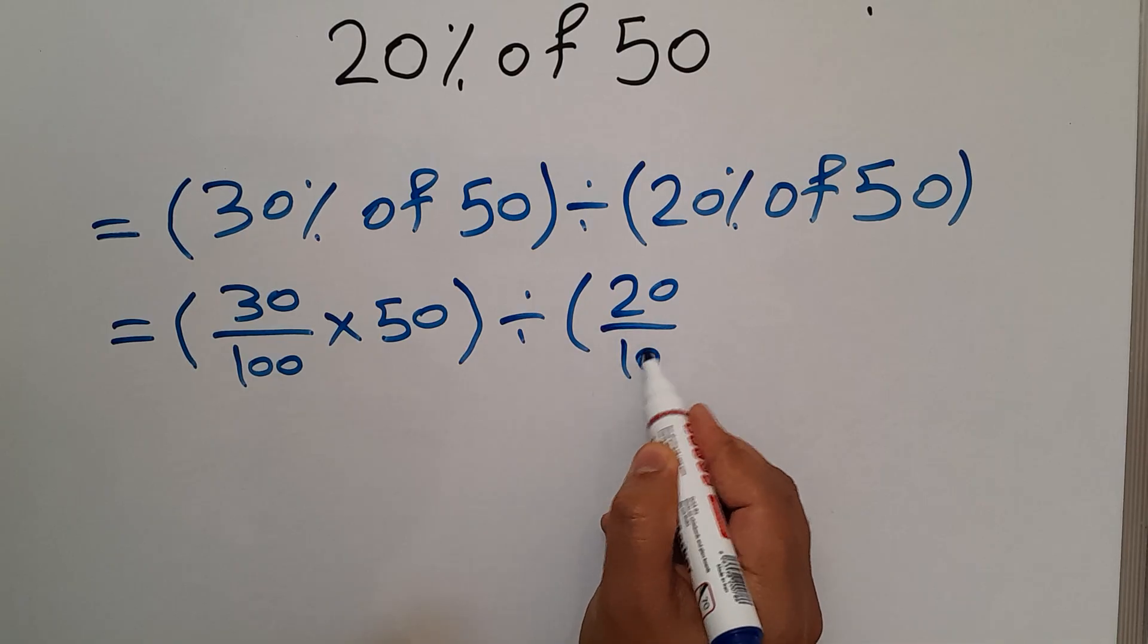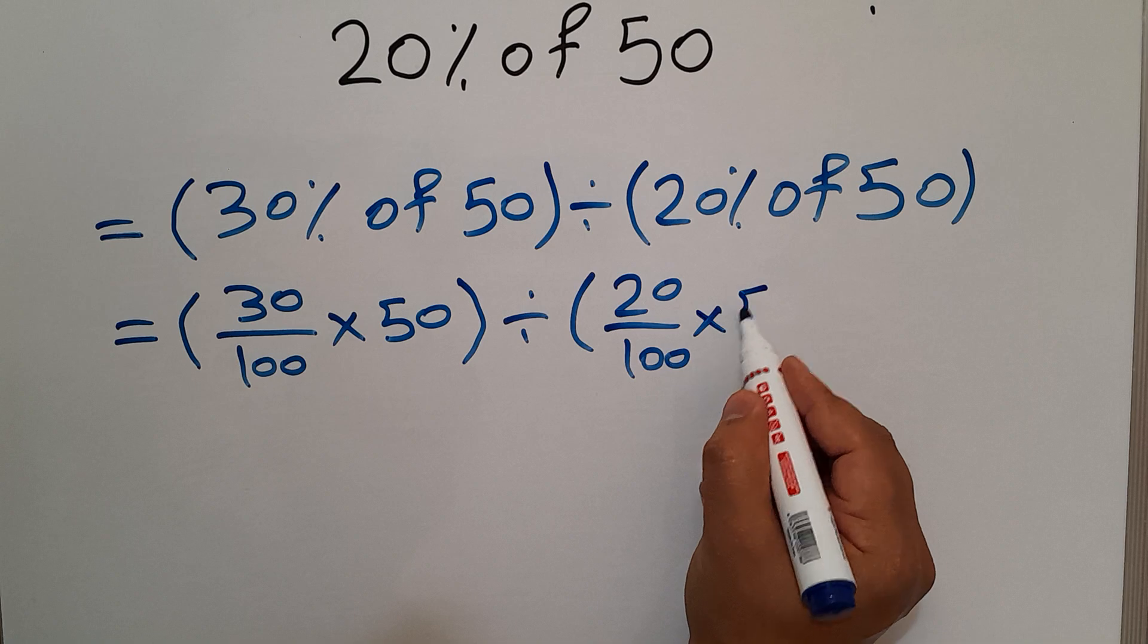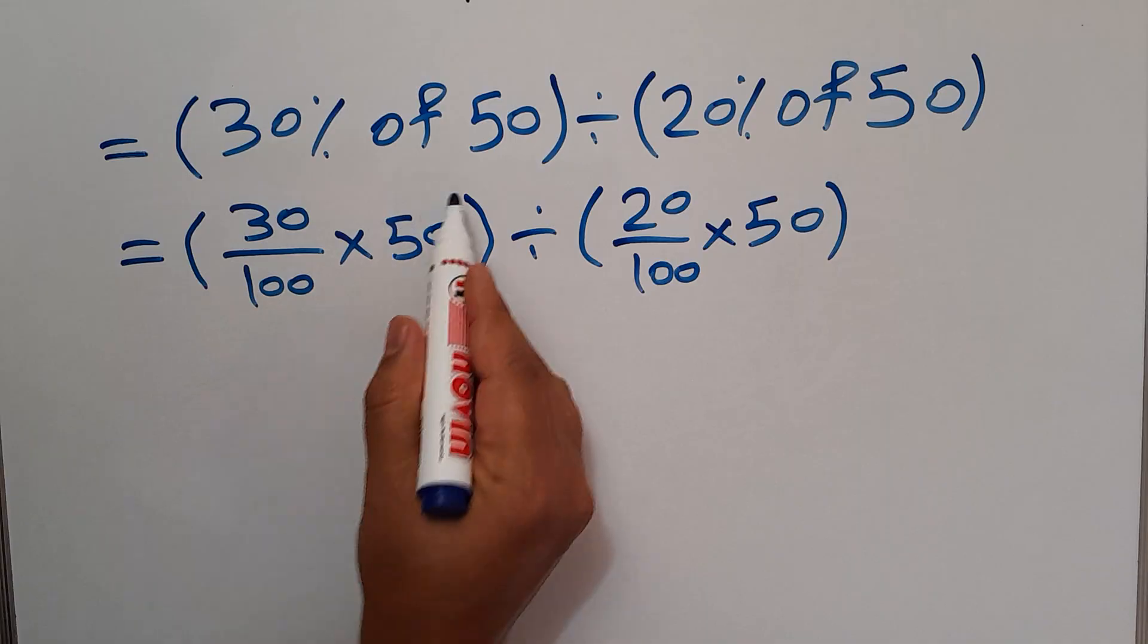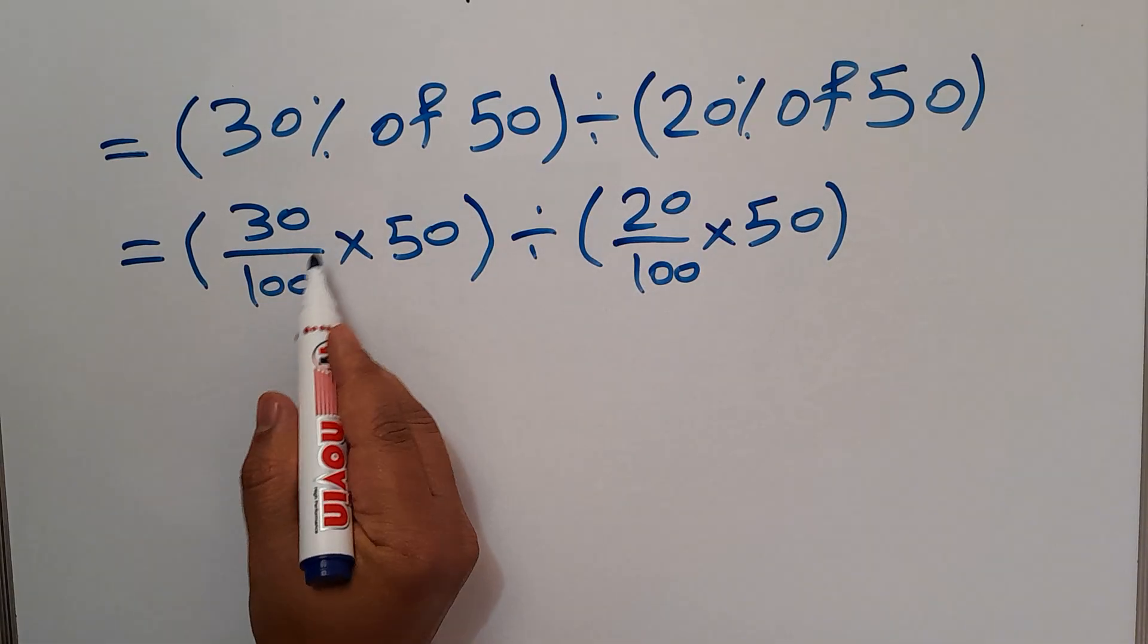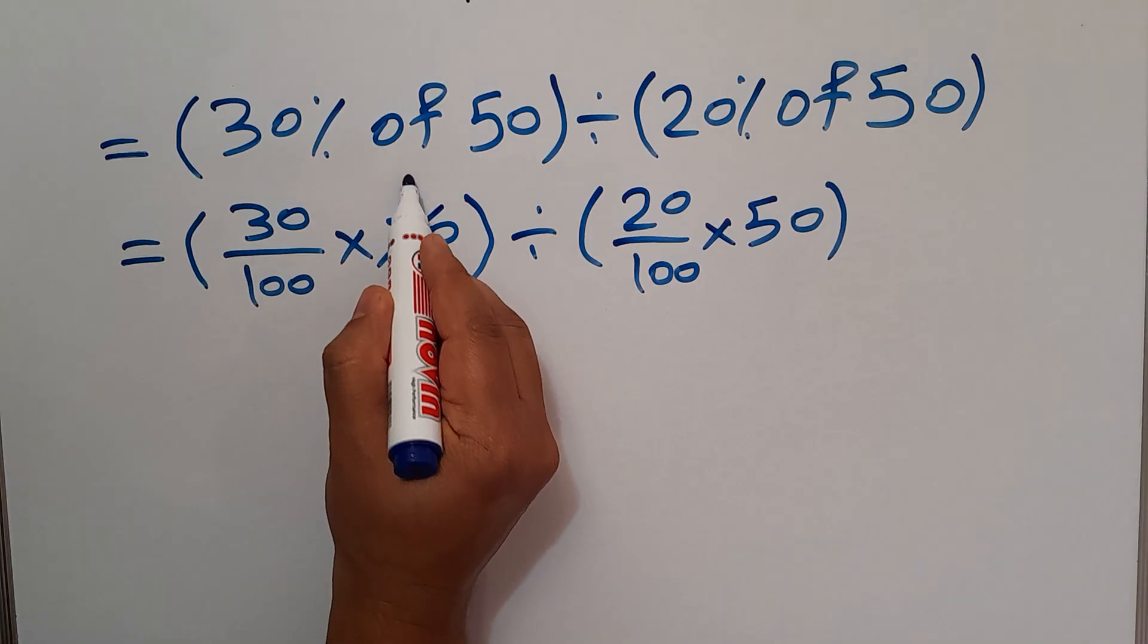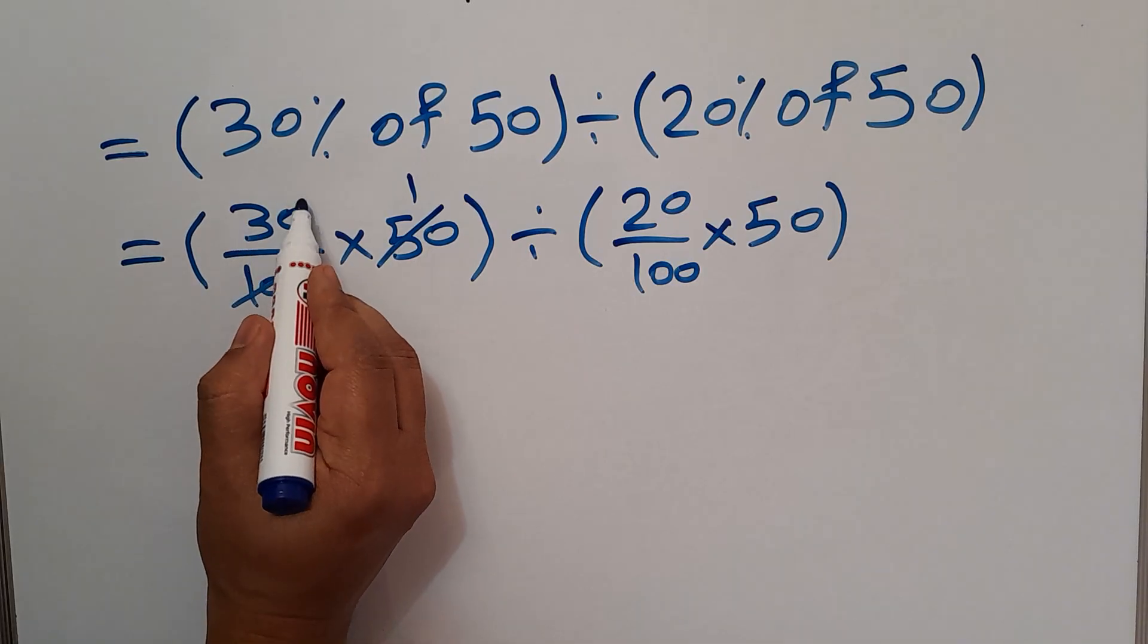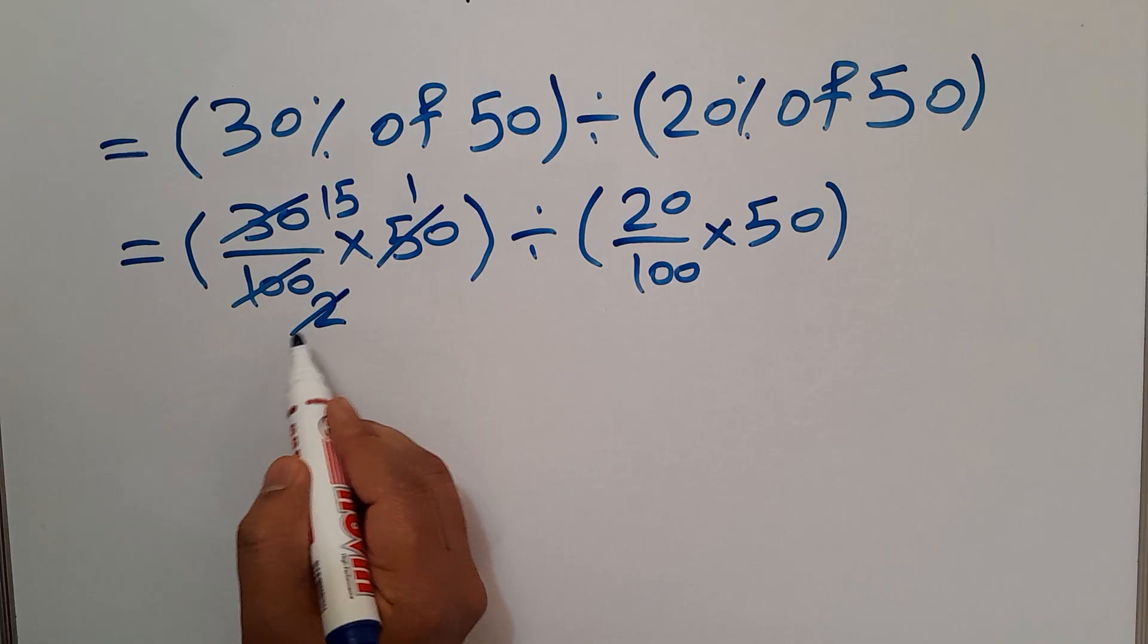So we have these parentheses divided by these parentheses. Here, 50 divided by 50 equals 1, and 100 divided by 50 equals 2. 30 divided by 2 gives us 15, and 2 divided by 2 equals 1. So the first parentheses is equal to just 15.